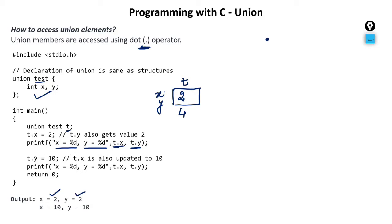Now we update t dot y by assigning the value 10. What will happen is that 2 will change to 10. Both members are sharing this same location, which is now updated to 10. If you then try to print the value of x through t dot x, and y through t dot y, you get value 10 for both.